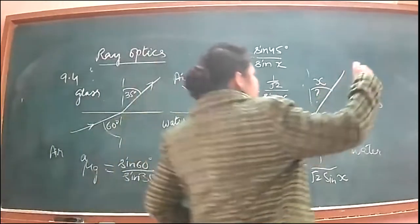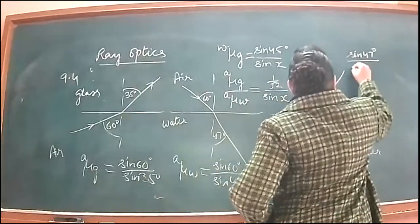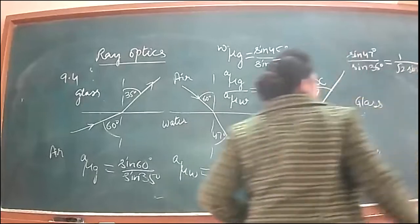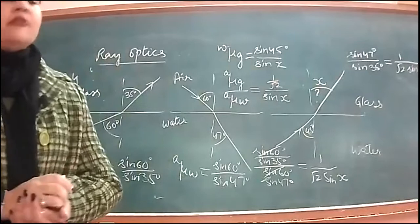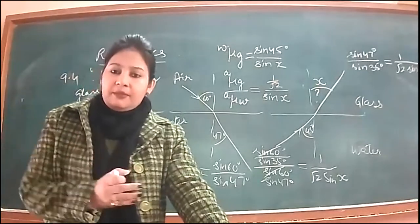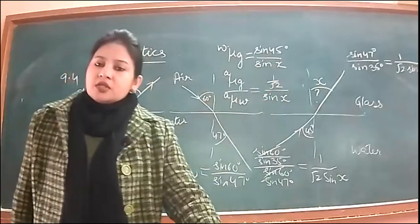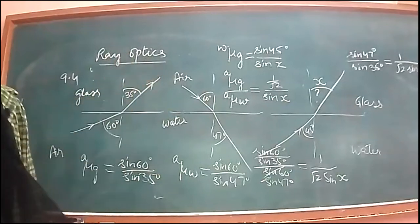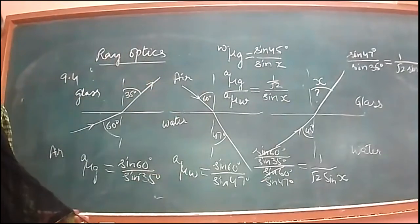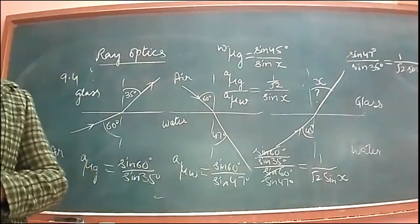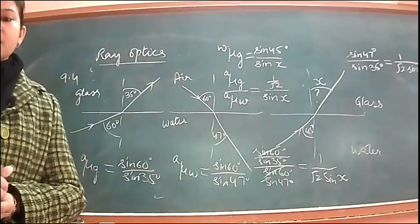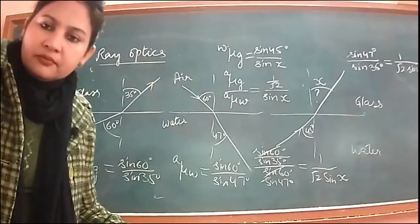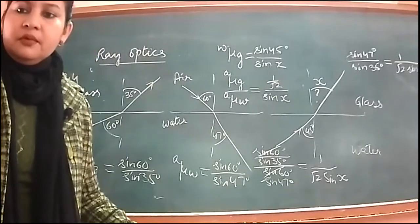Now you have to see the value of sine 47 degrees and sine 35 degrees from the tables and put the value here. After that, we will look at the angle and see the value of sine. After using compound slab formula, you will arrive at the answer. Mayank, is it clear?